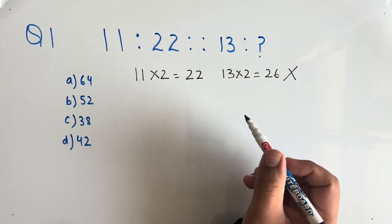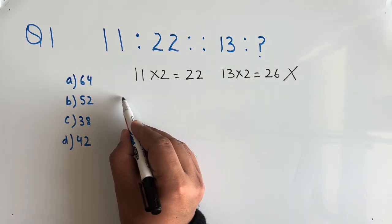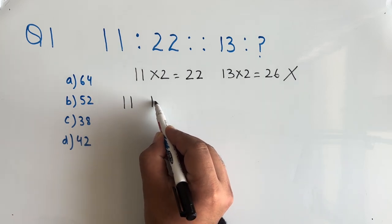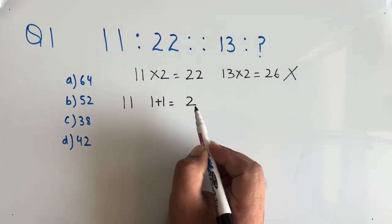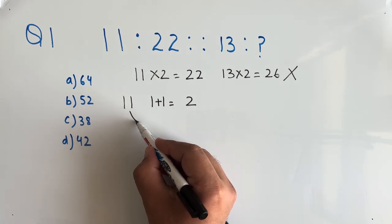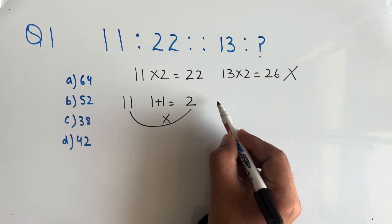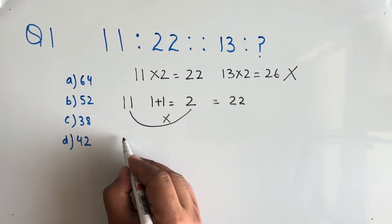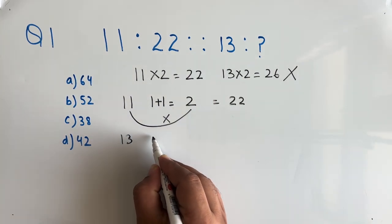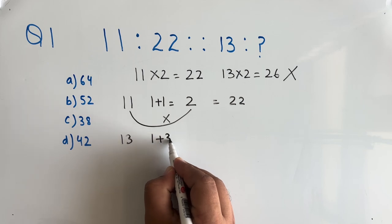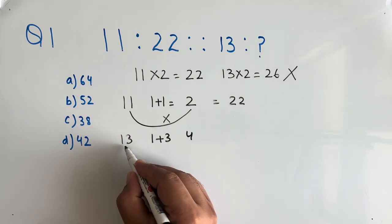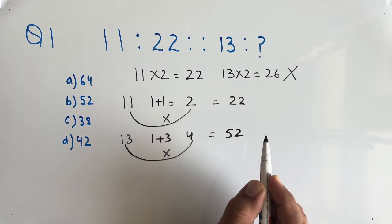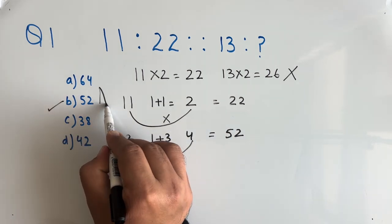So we will try another way. For 11, if we find the sum of digits, that is 1 plus 1 equals 2, and now if we multiply 11 by 2, we get 22. In the similar way with 13, the sum of digits 1 plus 3 is 4, and now 13 into 4 is 52. So option B is the correct answer.